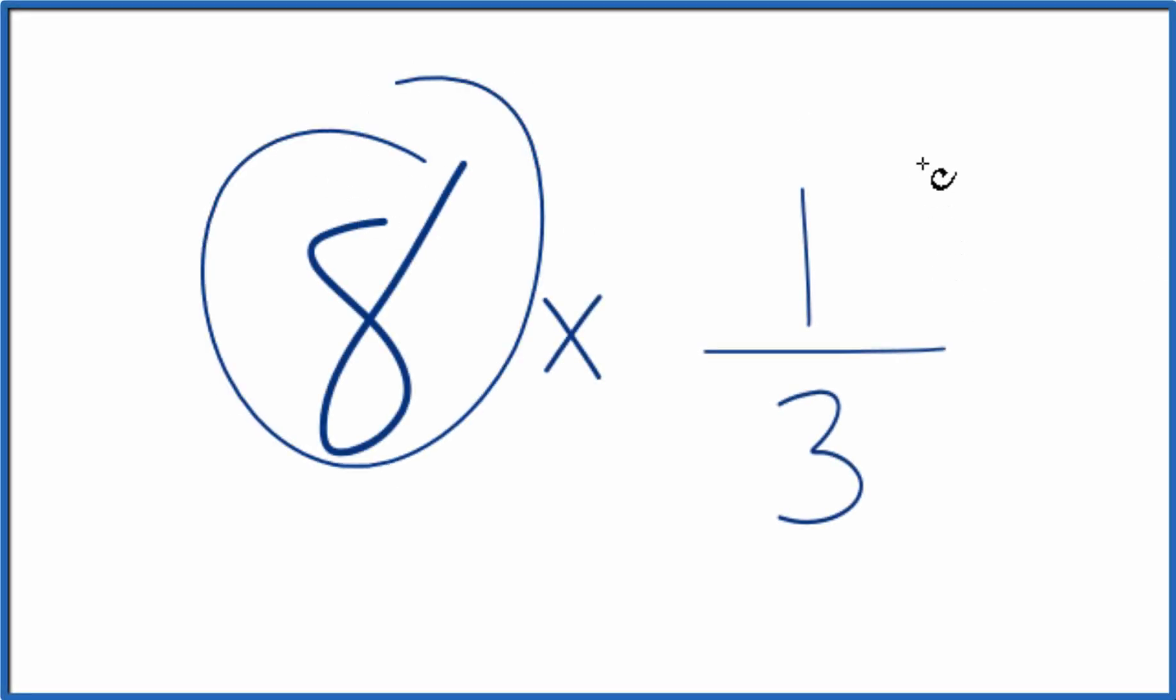Let's multiply 8 by 1/3. Here's how you could do it. You could just add up 1/3 eight times, and that would give you the correct answer for 8 times 1/3.